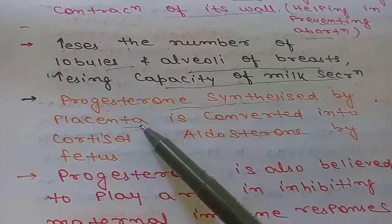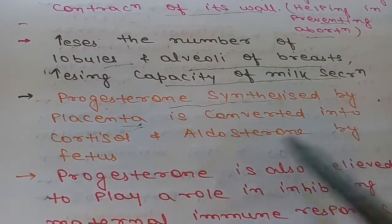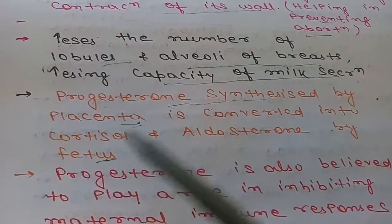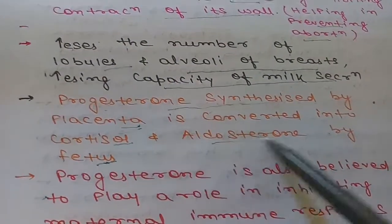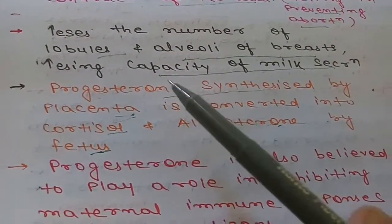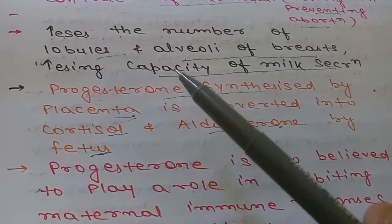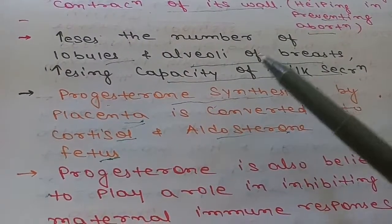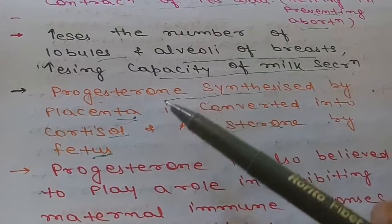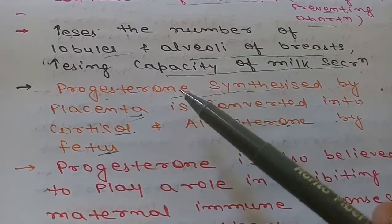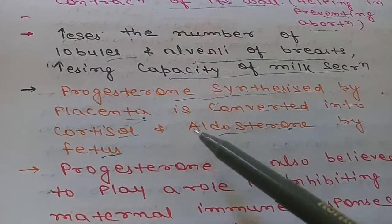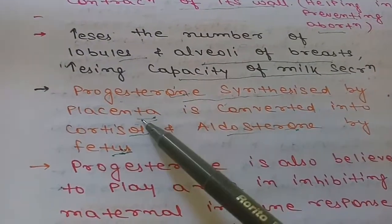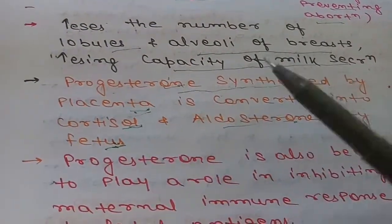The third function relates to the feto-placental unit. Progesterone is synthesized by the placenta and transported to the fetus, where the fetus uses it to synthesize cortisol and aldosterone. This is because the fetal adrenal gland has a deficiency of the enzyme 3-beta hydroxysteroid dehydrogenase, so the fetus cannot convert pregnenolone to progesterone on its own and requires progesterone from the placenta.